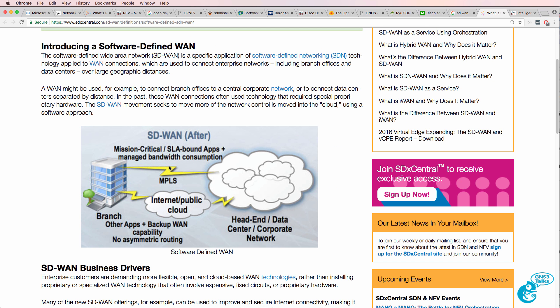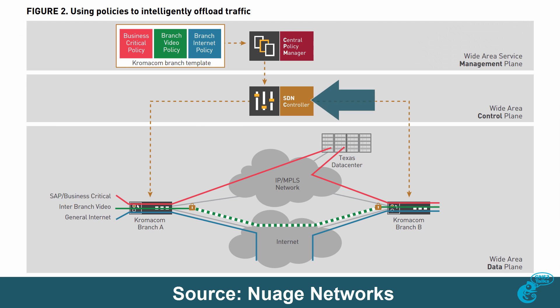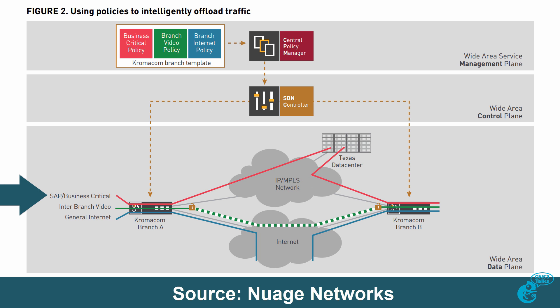The idea with SD-WAN is that traffic can be dynamically controlled — some traffic is sent through the MPLS network while other traffic is sent dynamically through the internet cloud. Rather than using static VPNs and policy-based routing, a controller can be used centrally to forward traffic. For example, low-latency applications such as voice and video could be sent through the MPLS network, whereas other traffic could be forwarded across the internet.